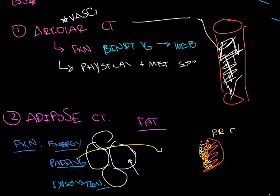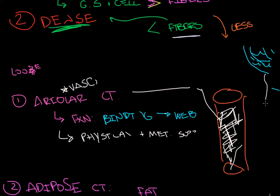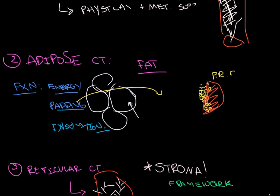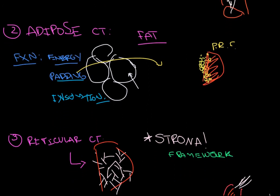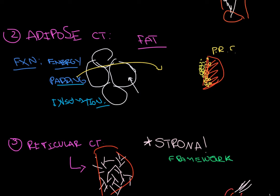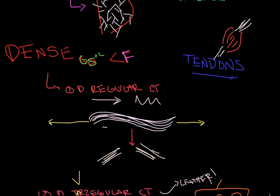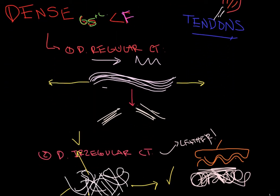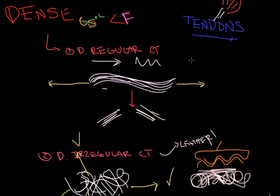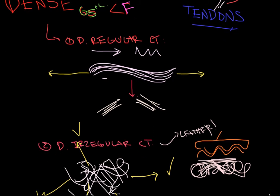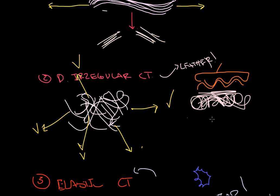Loose is areolar, which is kind of a catch-all binding and support, physical metabolic support, and looks like a web. This was supposed to be like Charlotte's Web with a little spider. Adipose CT is essentially fat and that's made up of a whole bunch of fat cells and those are the functions. Reticular CT makes the stroma of organs. Then we go into dense, which are tendons, resist pulling in one direction, which is dense regular.